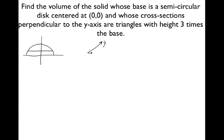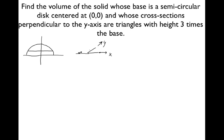So now that's the y-axis and this is the x-axis. Our circle looks like this — trying to draw it in 3D. That's supposed to be the same semicircle that you're looking at on the left. And then if we cut something like that right there, what are we going to get? We're going to get a triangle. Any way we slice it, we're going to get a triangle whose height is three times the base.